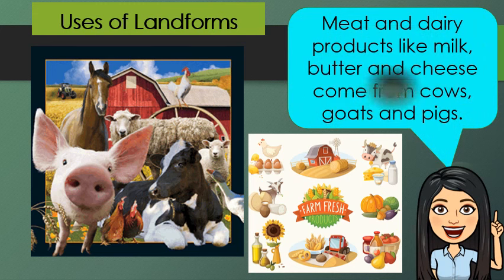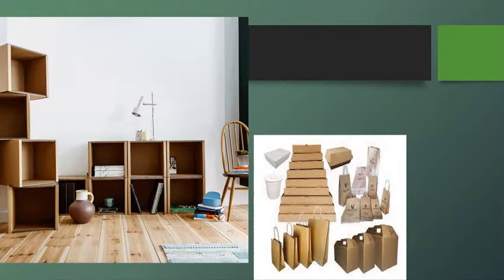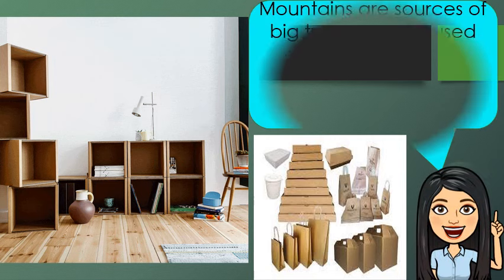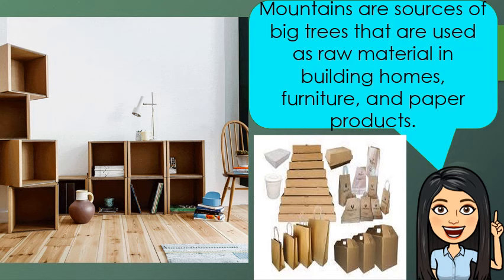Meat and dairy products like milk, butter, and cheese come from cows, goats, and pigs. Mountains are sources of big trees that are used as raw material in building homes, furniture, and paper products. To make paper from trees, the raw wood must first be turned into pulp.